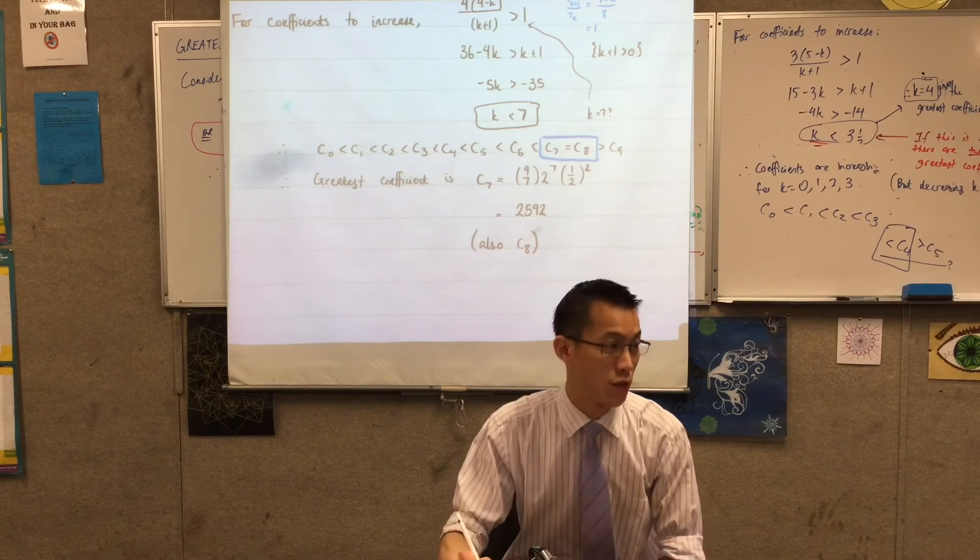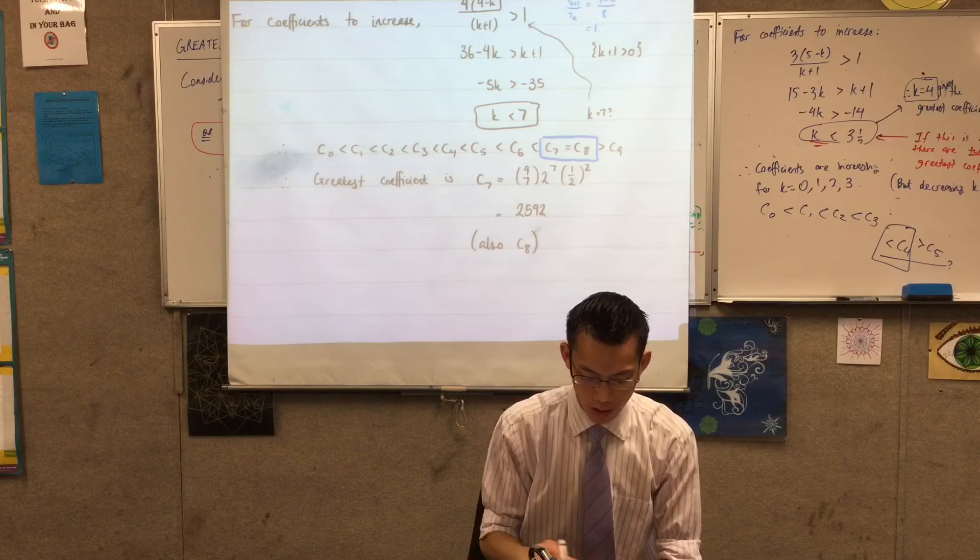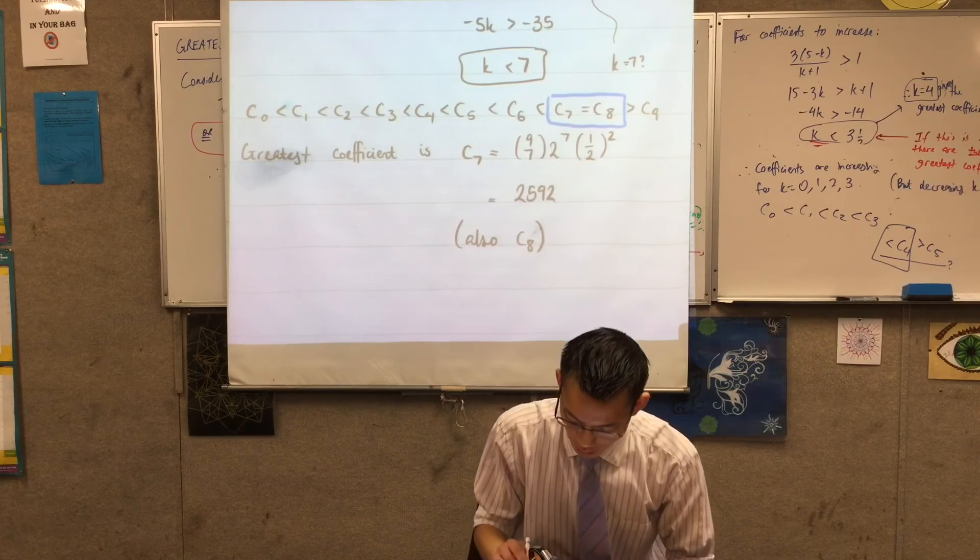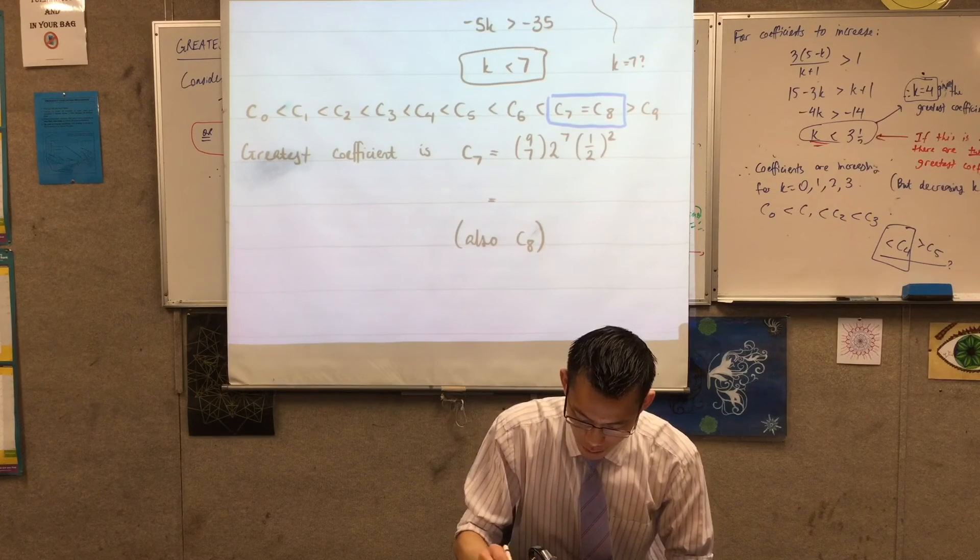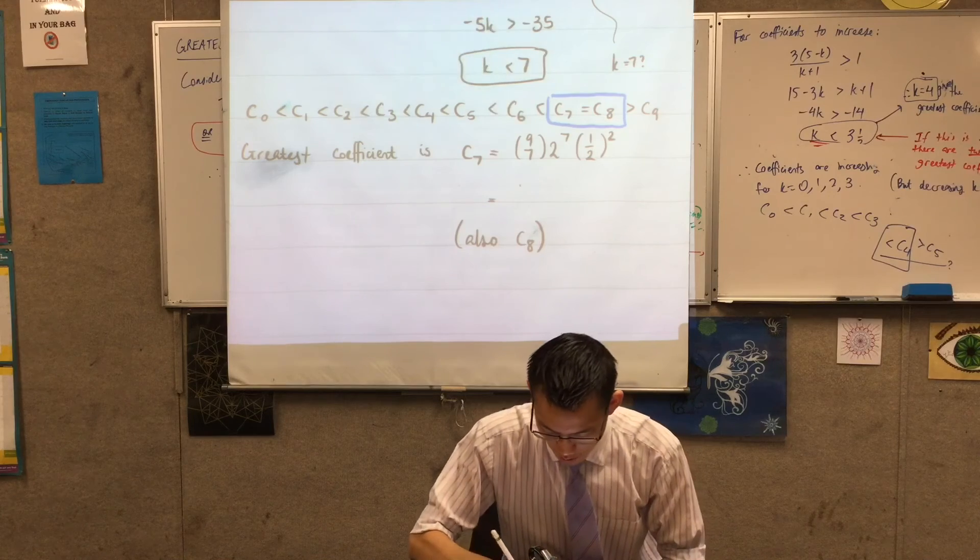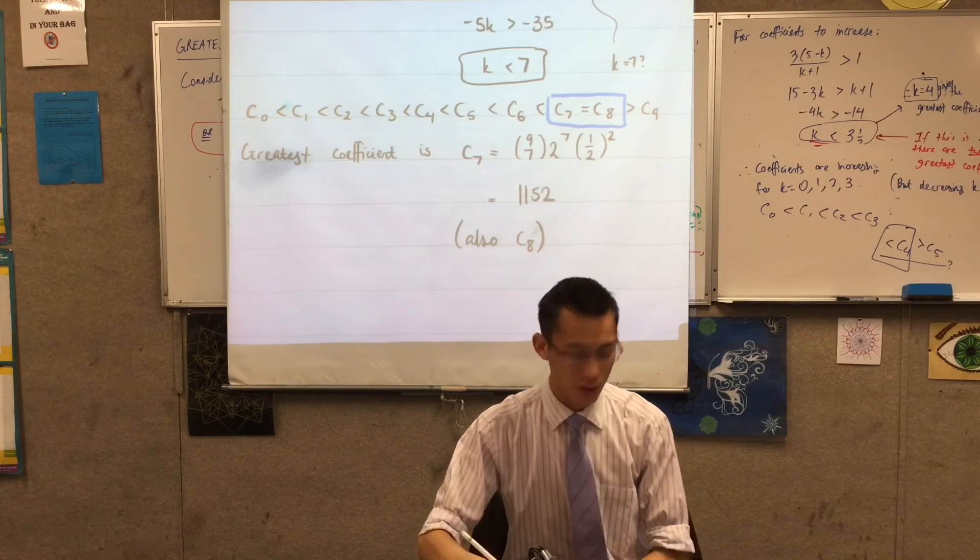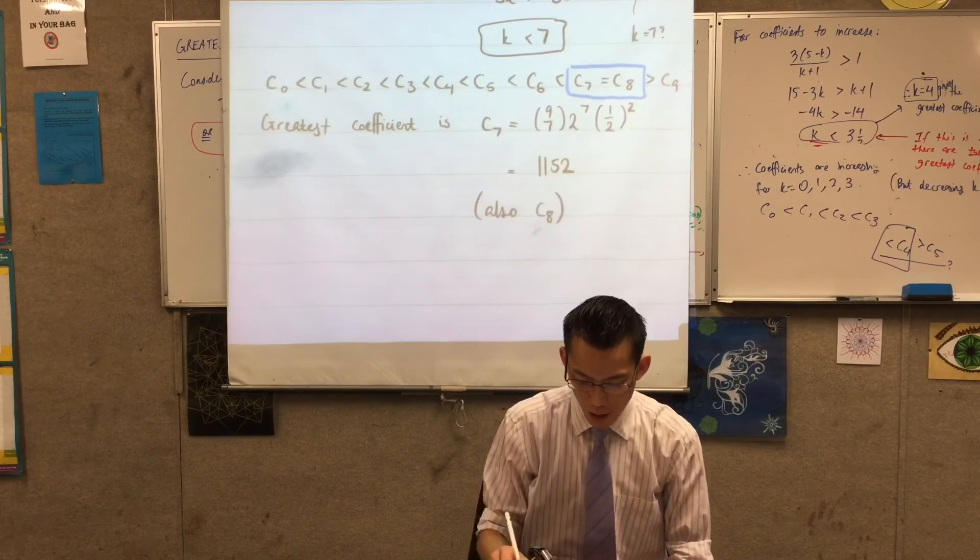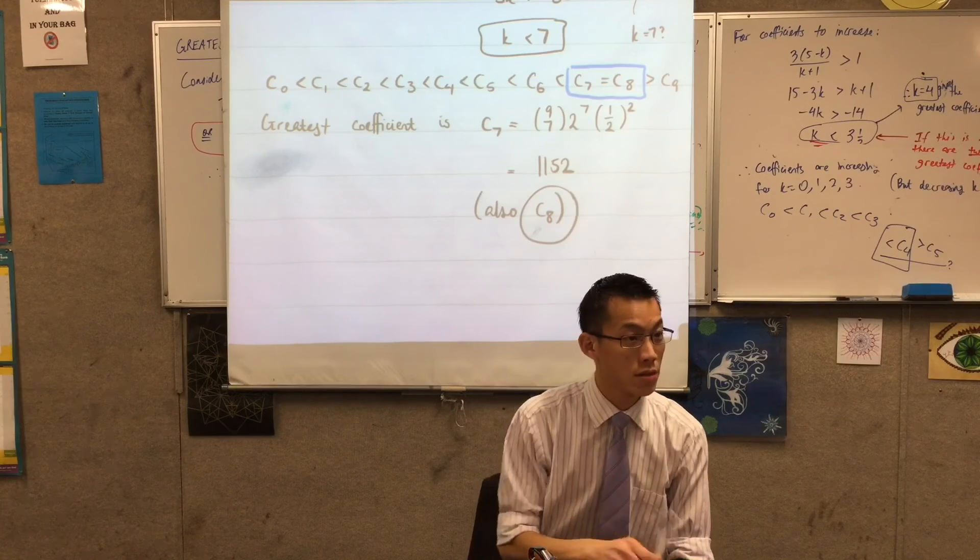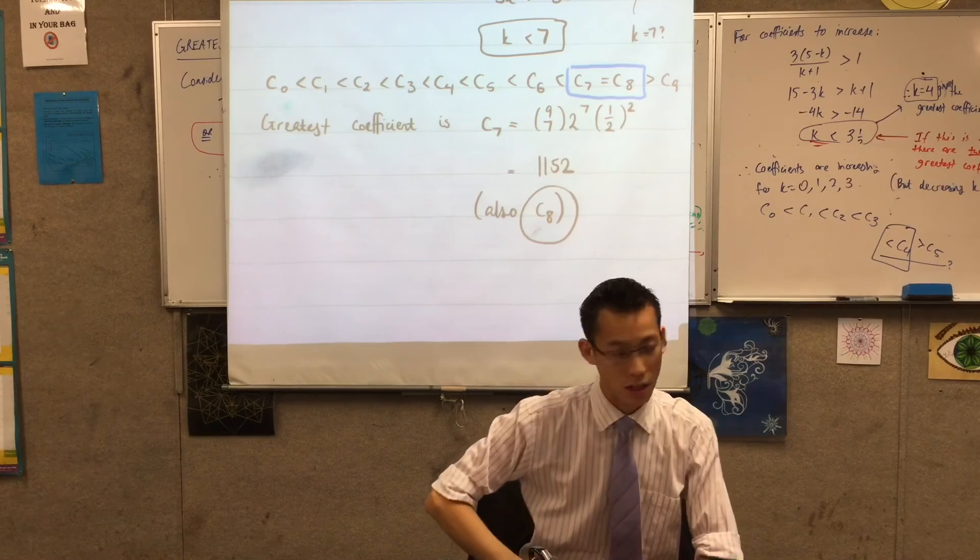There they are. I can work out what the greatest coefficient is, in the, sorry that number is actually wrong. I think from memory, I just punched this into my calculator a second ago, I think it's 1152. You can confirm that if you like but I also can say you know the term next to it, on just to the right, is also going to have the same value.